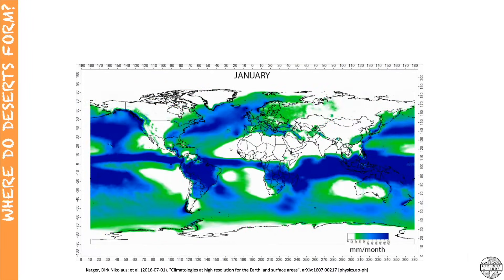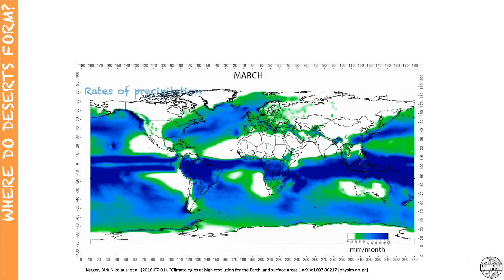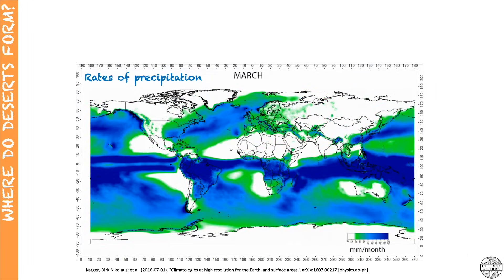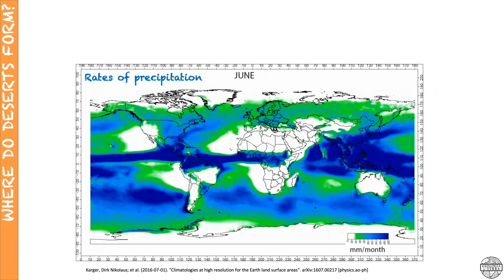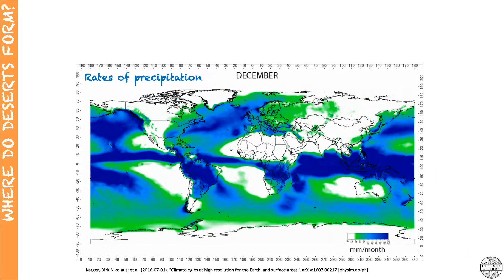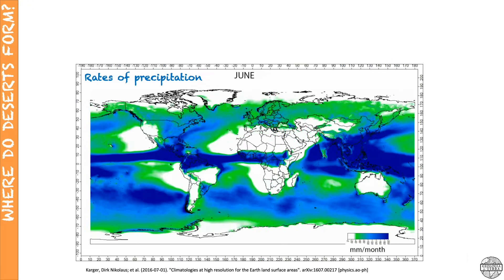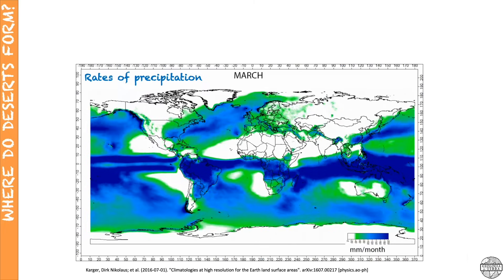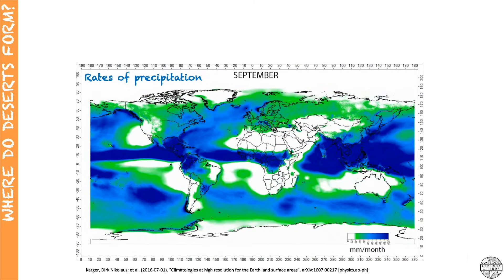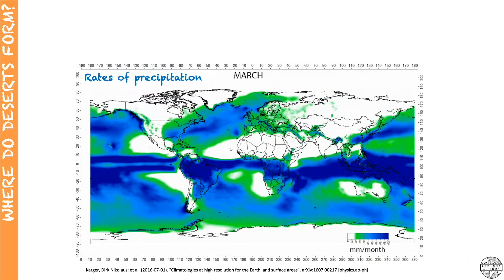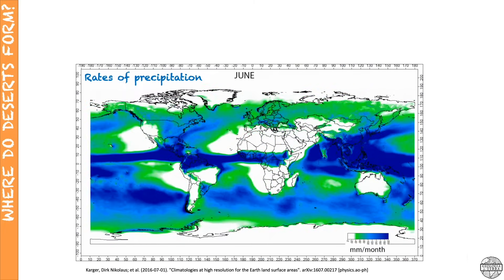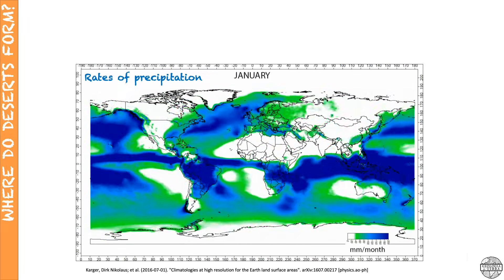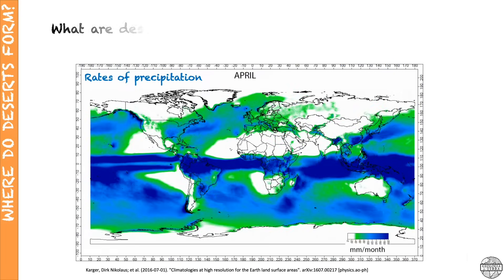Here is a map that shows the rates of precipitation in millimeters per month over the year in the world. Precipitation is just rain, snow, sleet or hail that falls to the ground. Note that the dark blue colors represent more rain per month than areas shown as white or green.